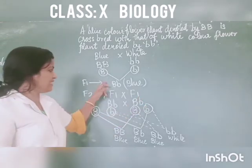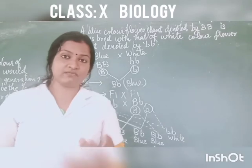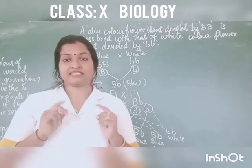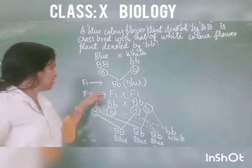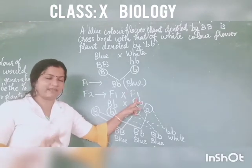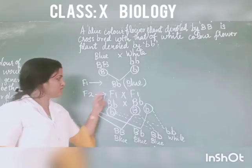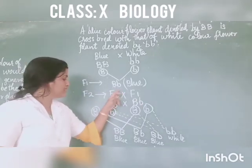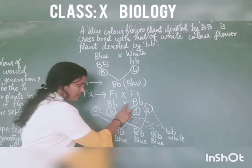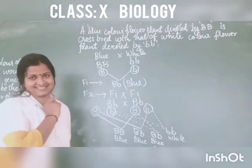Then for F2 generation — how can we form it? By self-pollinating the F1 plants. Self-pollinating means the F1 has to cross with the F1 — the same type of plants. So the F1 here is capital B, small b. So capital B, small b plants cross with capital B, small b plants.